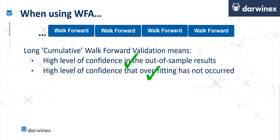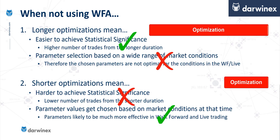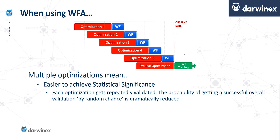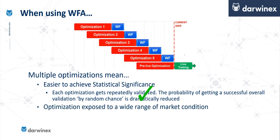Now let's turn our attention to the issues with the optimisation phase in the traditional approach. We identified both advantages and disadvantages of a longer optimisation period, and also advantages and disadvantages of a shorter optimisation period. But when using walk-forward analysis, because each of the individual optimisations gets repeatedly validated, the probability of getting an overall successful validation by random chance is dramatically reduced, therefore alleviating the issue around statistical significance.